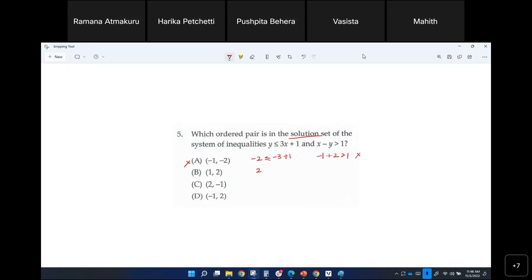So y is two and then if you plug in one for x, so that's three plus one. So that works. How about the next one? X is one and y is two. Is that a true statement? Nope. How about the next one, two comma negative one.